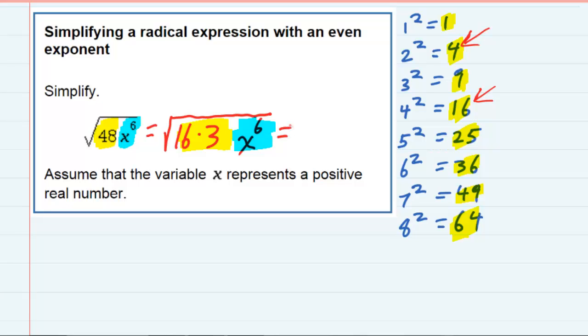So, what we will do is take out as much as possible from underneath the radical. Looking first of all at the 16 times 3, 16 is a perfect square, so it will come out. The square root of 16 is 4. That will come outside of the radical.